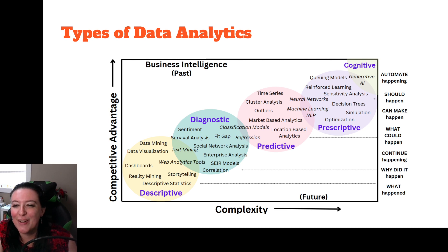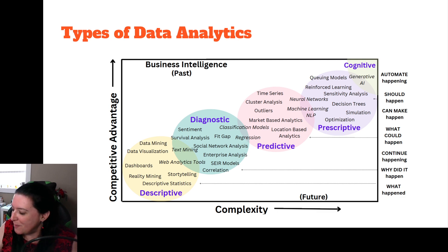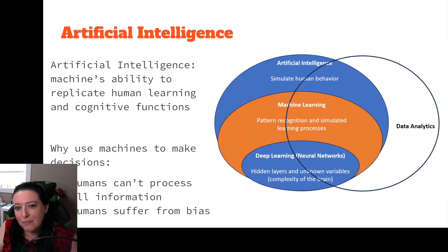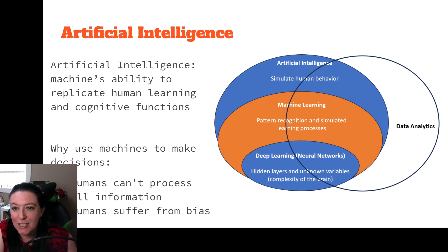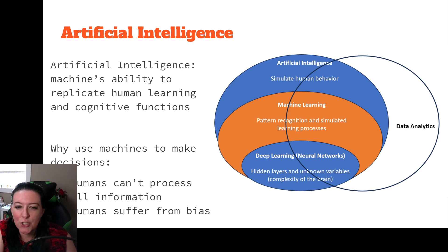Our next videos will look at how to do descriptive, diagnostic, predictive, and prescriptive analytics. Artificial intelligence is a machine's ability to replicate how humans learn and think — cognitive functions and human learning — essentially simulating human behavior and outsourcing our work to machines.